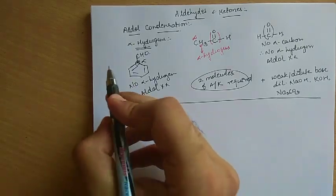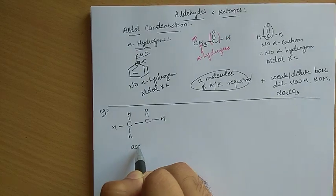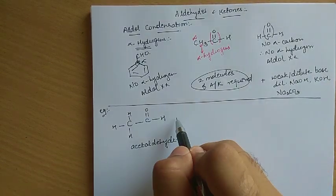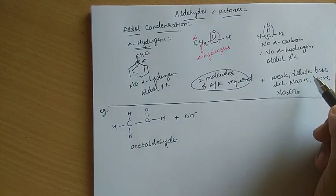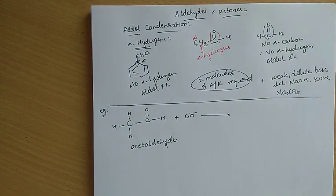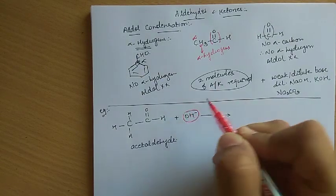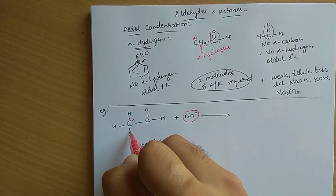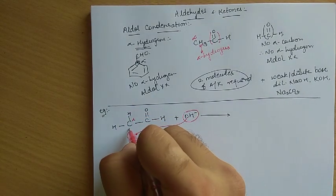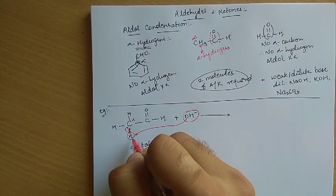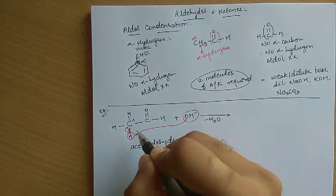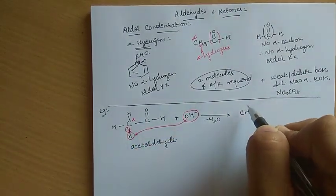Let's see through an example how this reaction occurs. Starting with acetaldehyde, a weak or dilute base gives OH⁻. This OH⁻ attacks the alpha hydrogen on the alpha carbon of acetaldehyde. As this hydrogen is attacked, it comes out as H⁺, the two electrons shift onto the carbon, and H⁺ combines with OH⁻ to give H2O. What remains is CH2⁻ with a negative charge on the carbon — this is your carbanion.